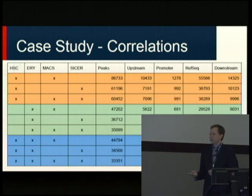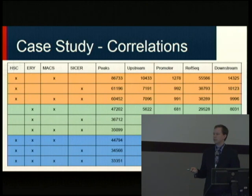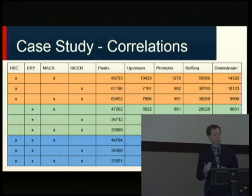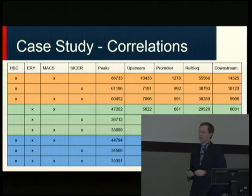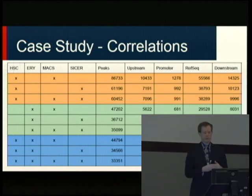We see the same pattern throughout. For HSCs we have 60,000 peaks; for EOys we have 35,000; and looking at both, we still have 33,000. From that we can determine that during the differentiation process, you demethylate — sites of methylation decrease during differentiation — and very little new methylation gets picked up along the way.